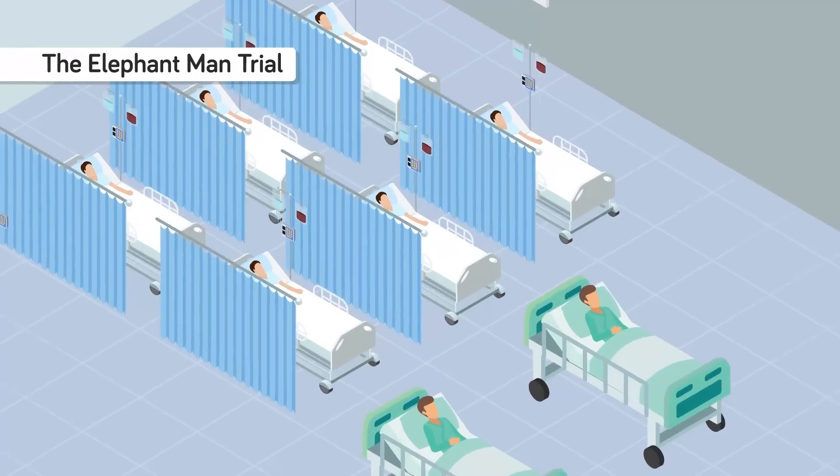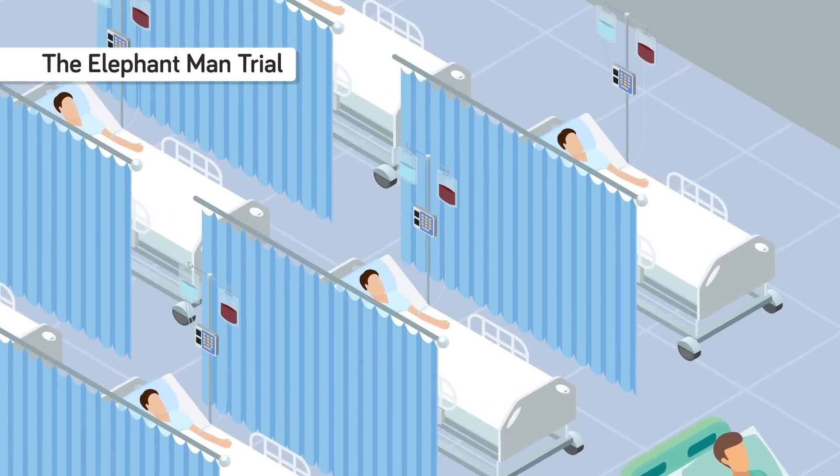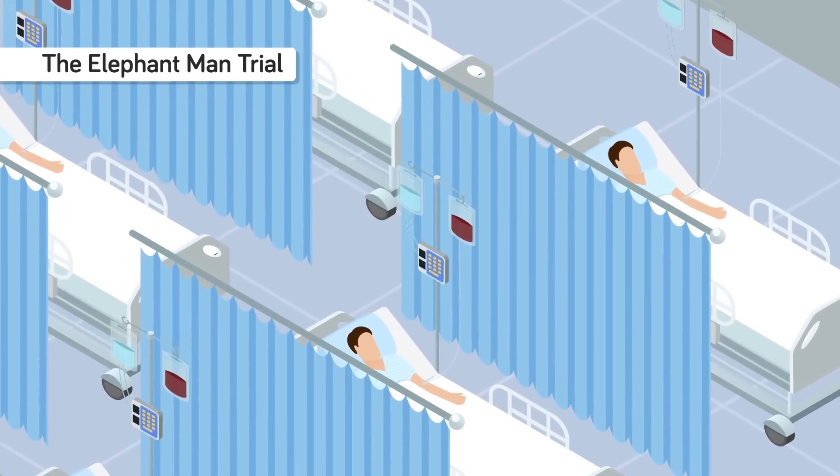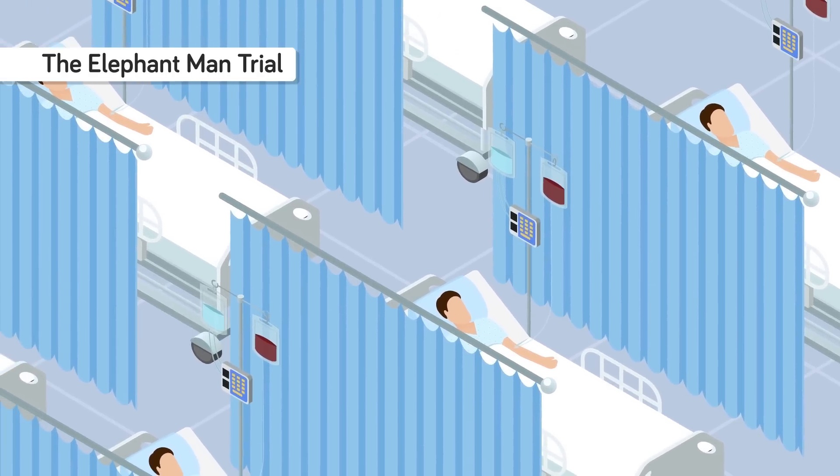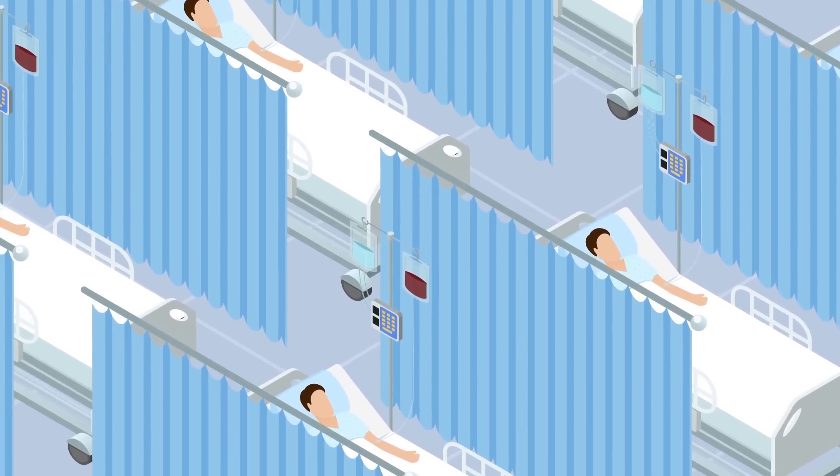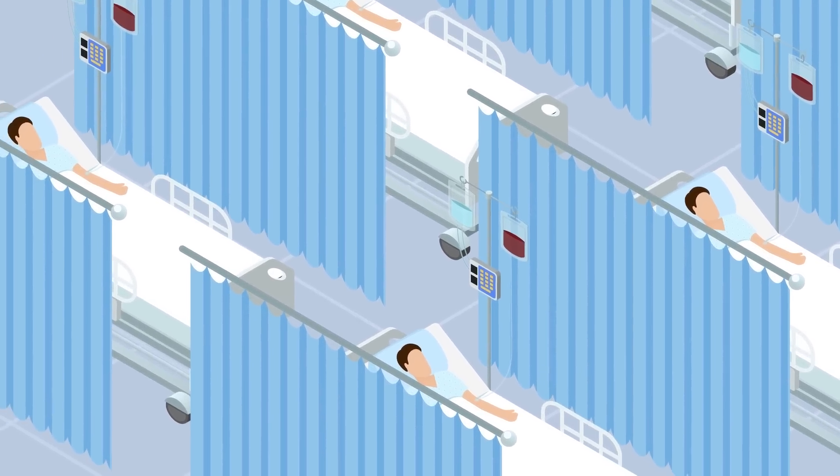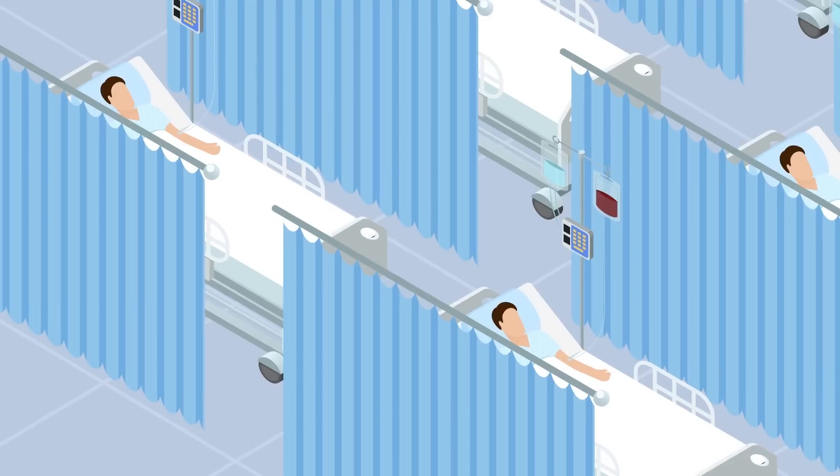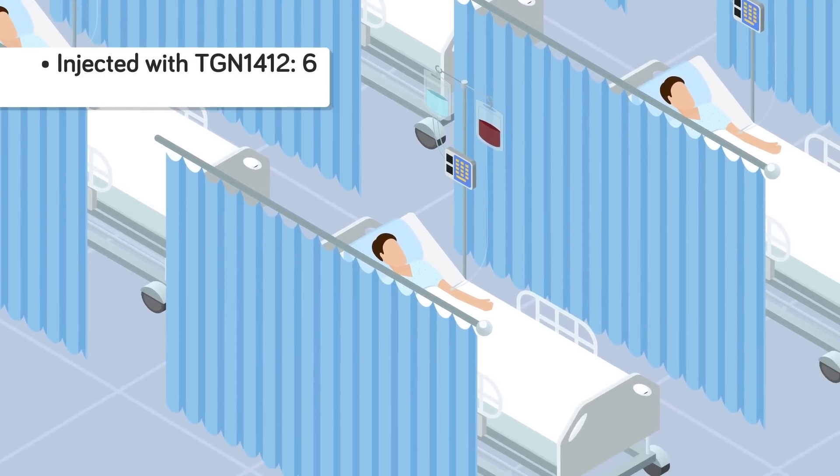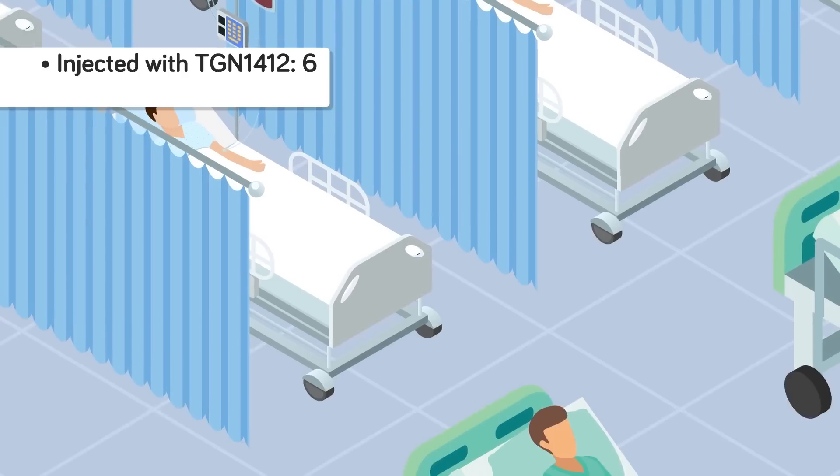The Elephant Man Trial. Finally, we come to perhaps the scariest story in drug study history. What we know about, anyway. It happened in the UK in 2006 at London's Northwick Park Hospital. Eight very healthy young men would be given an experimental immune system drug called TGN-1412 for the treatment of leukemia.